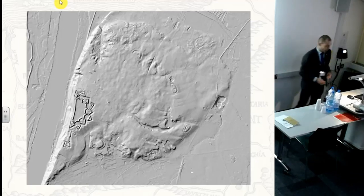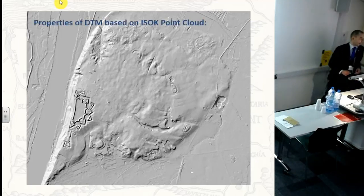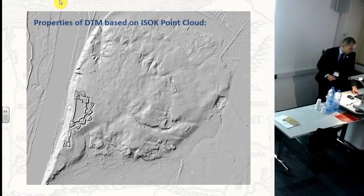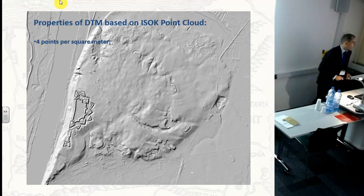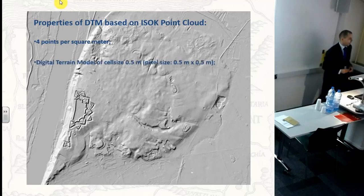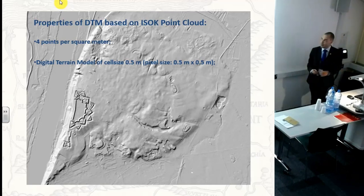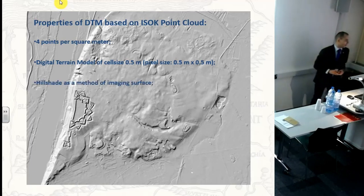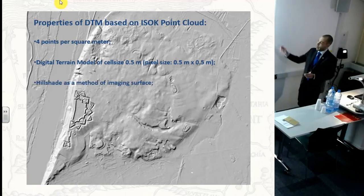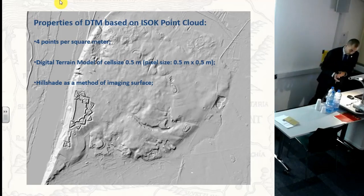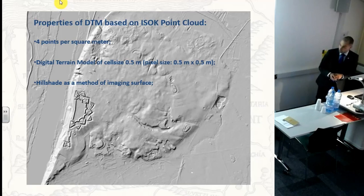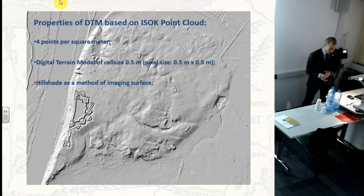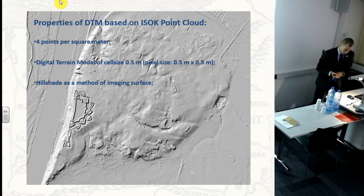As you can see, it's hillshade. We've got properties of this DTM based on LiDAR point cloud — it's four points per square meter. Digital terrain model cell size is half a meter. Hillshade is the method of imaging the surface. As you can see on this sample, this kind of imaging is good for objects which have a permanent terrain form, like this object.